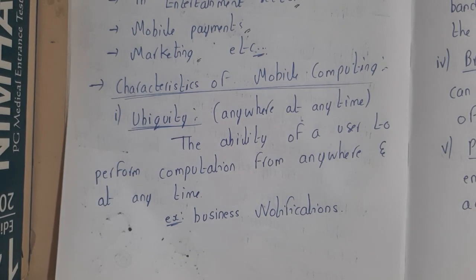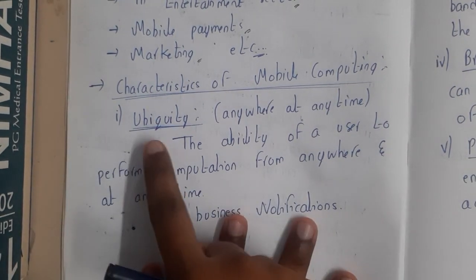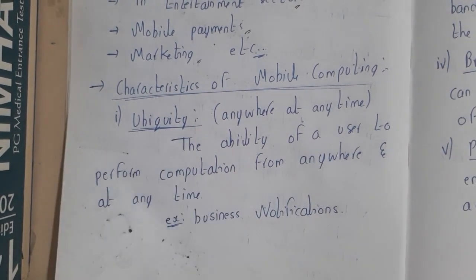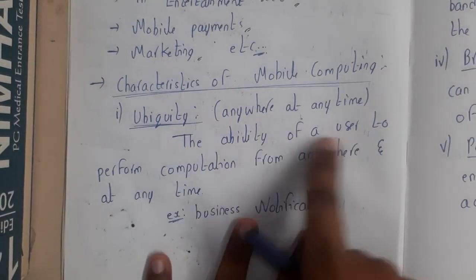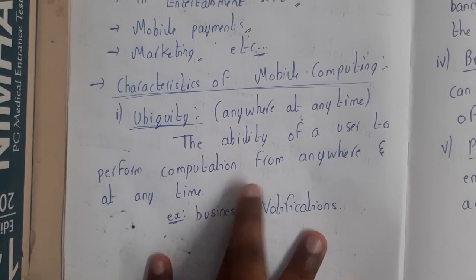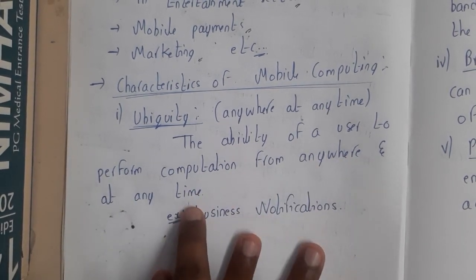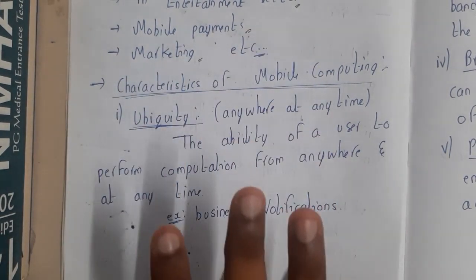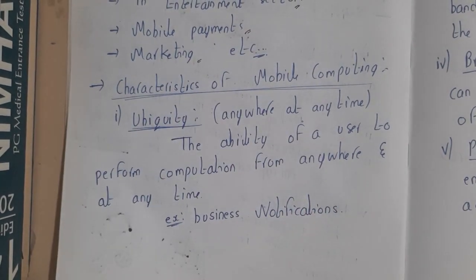Now let us go through the characteristics of mobile computing — the things that make it so useful. The first major characteristic is ubiquity, which means anywhere at any time. The ability of a user to perform computation from anywhere and at any time is what we call ubiquity.